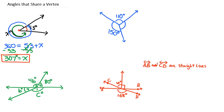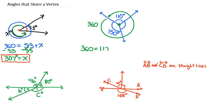Let's take a look at this next one with three angles. The same thing applies — we can go all the way around and this is 360 degrees. All of these angles that share the vertex add up to 360 degrees. So we can write an equation: the total of all of them is 360 degrees. We know 110 degrees, 150 degrees, and this unknown one we can call y degrees.